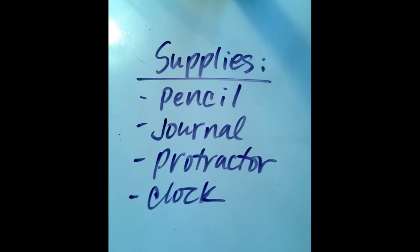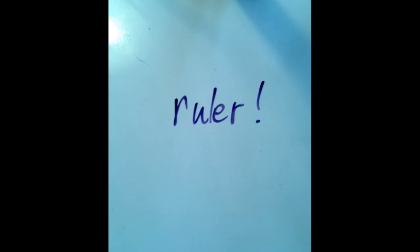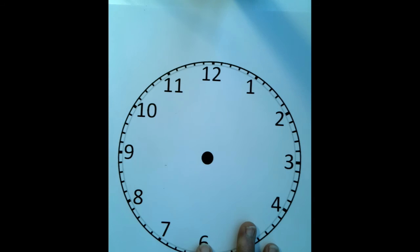The supplies you'll need today: a nice sharp pencil, your geometry journal or your math journal, the protractor that you have been using, a clock, and a ruler. You'll need a bigger ruler than the one that is part of your protractor.